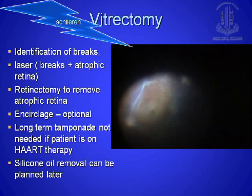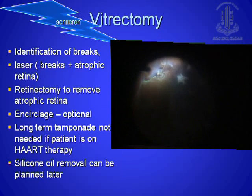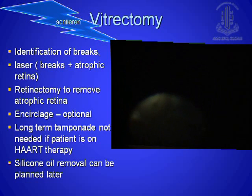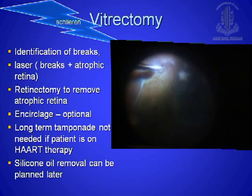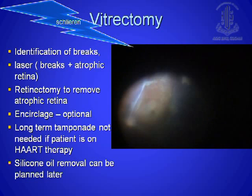Identifying the break is important. One clue is that you have schlieren — if you look at the area where you can start seeing schlieren, as you see in the upper half of the video, that is your primary break. Once you get the breaks, then obviously you start doing laser around the atrophic retina. And again, emphasize retinectomy to remove the atrophic retina which is not necessary to preserve. But most often this atrophic retina is stuck to the choroid, so you don't have to really do retinectomy.